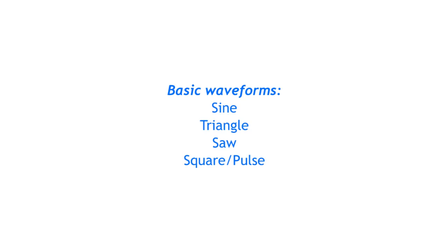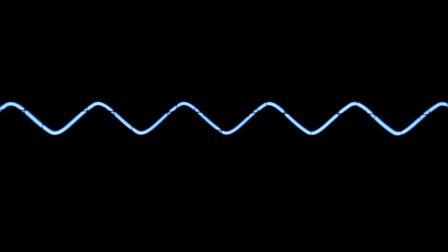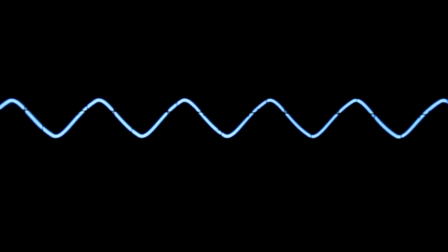Those were the basic waveforms you will find on many VCOs and LFO modules. Next, let's use a filter to shape the waveforms. This is a square wave through a low-pass filter. You can see that we get close to a sine wave, because the filter removes the harmonics above its cutoff frequency.